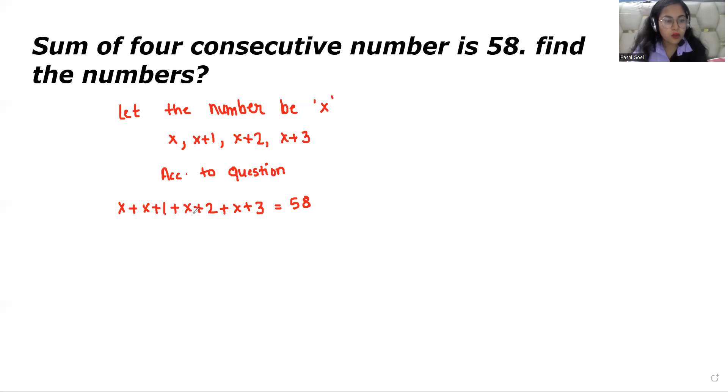Now we combine variables and constants separately. The variables are x, x, x, and x, which gives us 4x. The constants are 1 plus 2 plus 3, which equals 6. So we have 4x plus 6 equals 58.